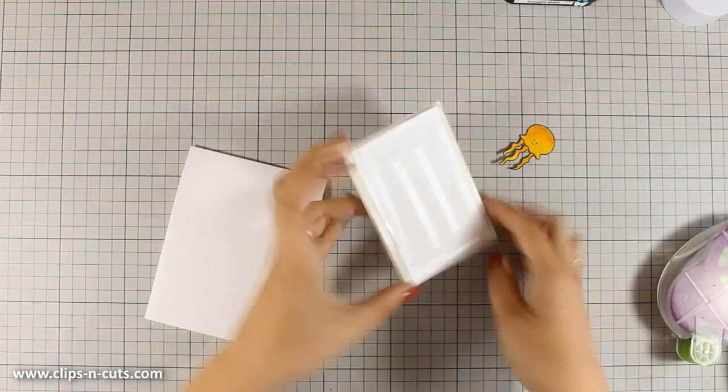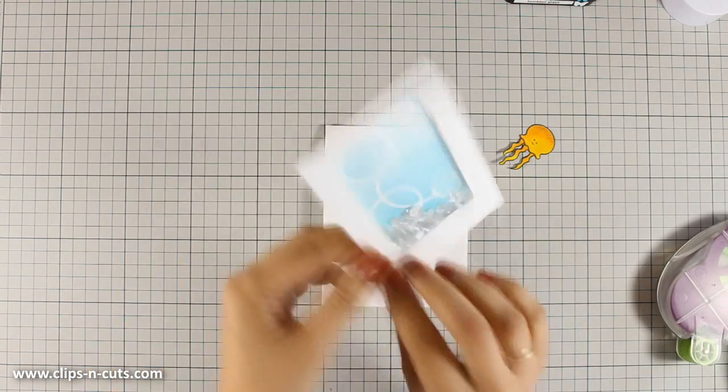So I am using some tape adhesive at the back of my shaker element and I am going to stick it on top of a standard card that's a 4 1/4 by 5 1/2 top folding card.